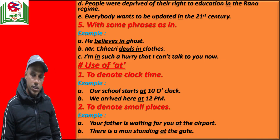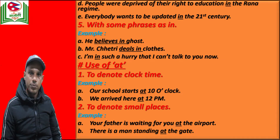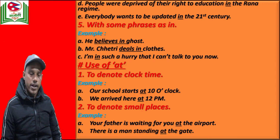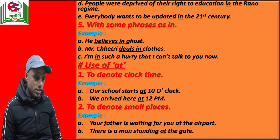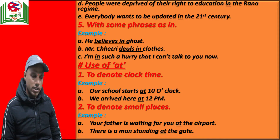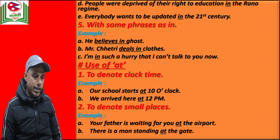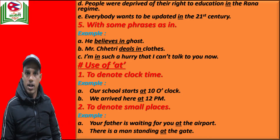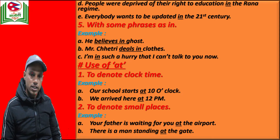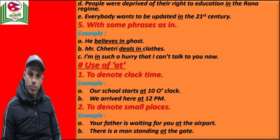The next condition where we use preposition 'at' is to denote small places. To denote bigger places we use preposition 'in', but to denote a small place we use preposition 'at'. For example: your father is waiting for you at the airport. There is a man standing at the gate. So: at the airport, at the bus park, at the gate — these are smaller places, and to denote such small places we use preposition 'at'.